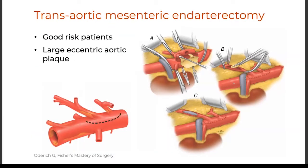Transaortic endarterectomy is a very neat, technically pleasing operation. It does take more dissection and probably more ischemia time than the supraceliac bypass. Nonetheless, it's a very valid option — nice because there is no prosthetic material, so if you have acute mesenteric ischemia with contamination, that is an option. Also, if you have a large calcified plaque to treat in the aorta, it's a valid option.